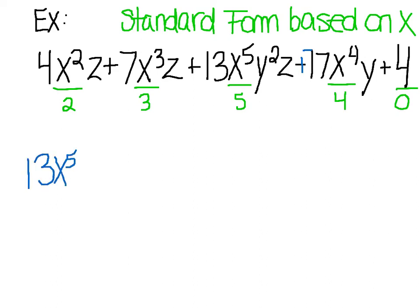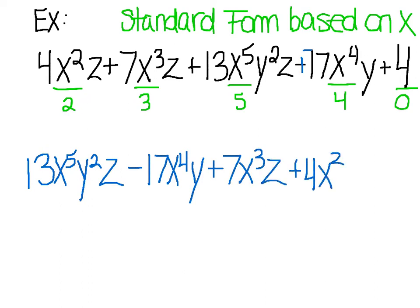13x to the fifth y squared z. My next one after 5 is 4. But remember, it's adding a negative so I can subtract 17x to the fourth y. This is just to allow us to not forget that that subtraction sign goes with the 17. Afterwards comes the 3. So plus 7x cubed z, then plus 4x squared z, and finally plus 4.